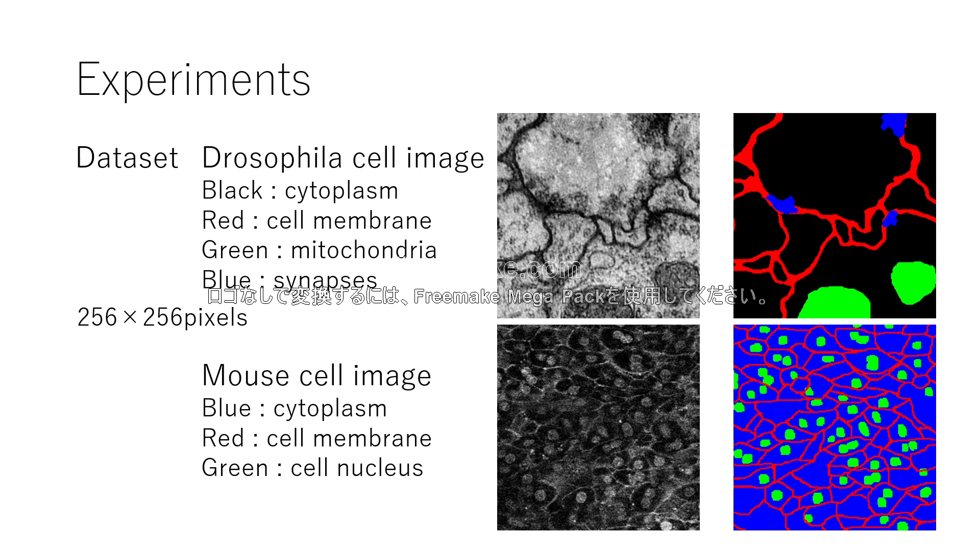The other is mouse cell image dataset. This dataset consists of three classes: blue is cytoplasm, red is cell membrane, and green is nucleus. Images in both datasets are 256x256 pixels.